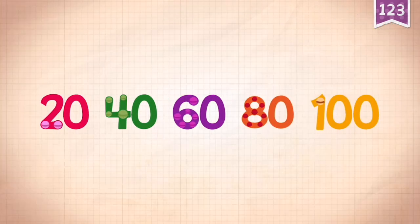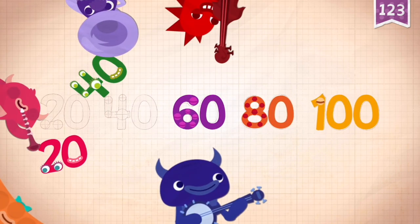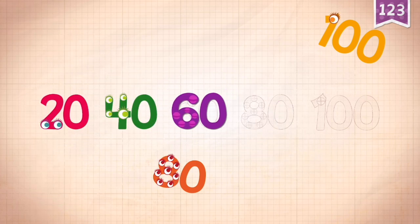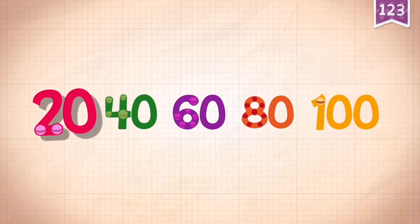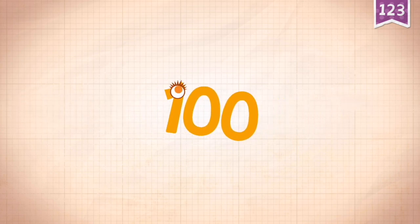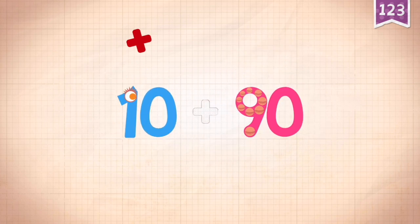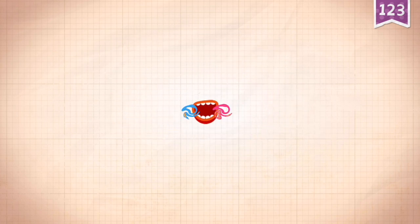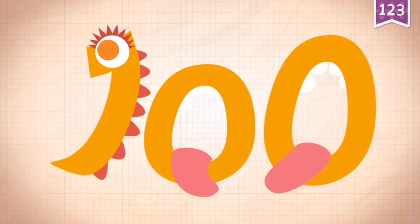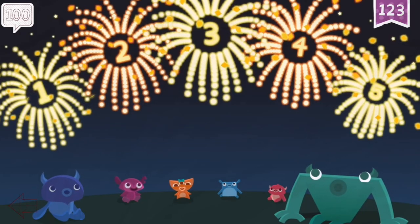Count by 20s: 20, 40, 60, 80, 100. Practice: 20, 40, 60, 80, 100. Now 10 plus 90 equals 100. 100!